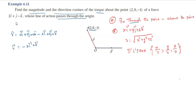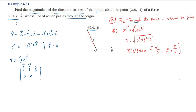Now we calculate the torque of the force. The torque t-vector is equal to r-vector cross f-vector. This equals the determinant with i-vector, j-vector, k-vector in the first row. The r-vector components are minus 2, 0, 1. The f-vector is 2i-vector plus j-vector minus k-vector, so the f-vector components are 2, 1, minus 1.